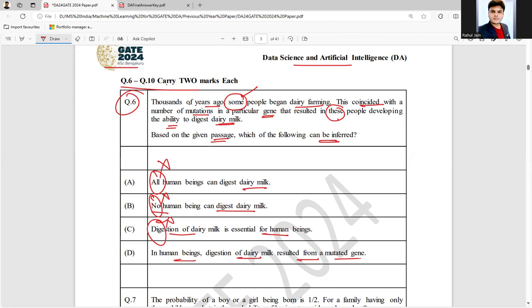Option D: In human beings, digestion of dairy milk resulted from a mutated gene. Yes, this is the correct answer. Just based on this paragraph, we can conclude option D is the correct answer for this GATE DA 2024 two mark question. So it's an easy question; we only need to apply thinking.